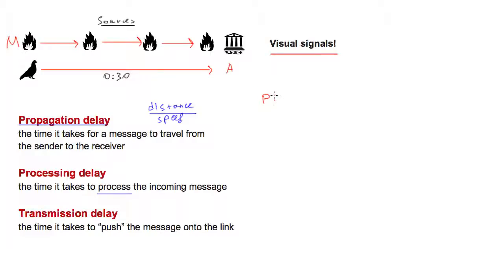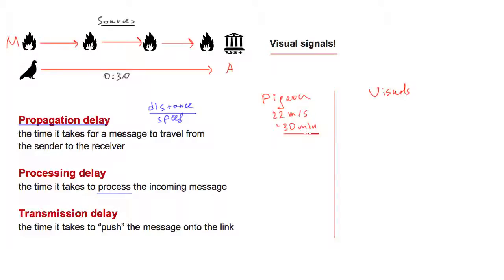Let's compare the pigeon to visual signals and break apart the delays. For propagation delay, the distance is 42 kilometers in both cases. The pigeon travels at 22 meters per second, taking approximately 30 minutes — so propagation delay is 30 minutes. For visual signals, the signals travel at the speed of light, which is 300 million meters per second. To travel 42 kilometers at that speed is essentially a rounding error, so for all intents and purposes it is zero seconds.